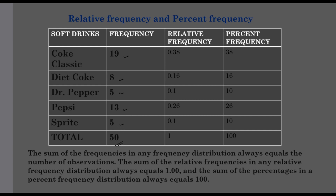Now we are going to the relative frequency. We have total frequency 50. 19 divided by 50 is the relative frequency — that value is 0.38. 8 divided by 50 is 0.16. 5 divided by 50 is 0.1. Pepsi is 13, so 13 divided by 50 is 0.26. And Sprite is 5 divided by 50, which is 0.1. This is our relative frequency — the class interval divided by the total frequency.